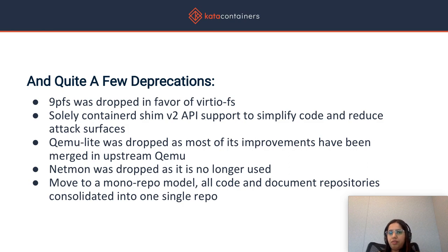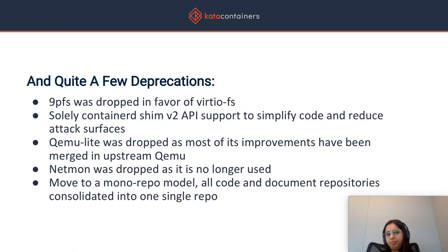In addition to all the extensive feature additions, there were a few deprecations as well. We deprecated 9P and made Shim V2 the default. We also deprecated QEMULite, which was a lightweight version of QEMU introduced after removing all the legacy code and devices no longer applicable to container workloads — this hypervisor was dropped as most of those downstream improvements were upstreamed. NetMon, a network monitoring tool used with Docker, was dropped as well since it was no longer required. From a developer point of view, we moved to a mono-repo model, moving all our code and document repositories into a single repo, which greatly simplified our CI and release process.